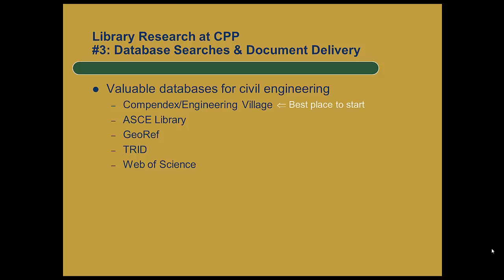By far the best place to start is with Compendex slash Engineering Village, and that's the one I'll be showing you today. That often is the only place you'll need to search for engineering articles. The ASCE library is a good place to search if you're looking for an ASCE journal paper or conference paper, but it only has papers from within ASCE. GeoRef is a good place to search if you're looking for papers in geology or engineering geology — a lot of those will be in Compendex, but if they're not, that's a good place to look.